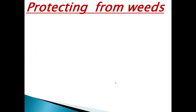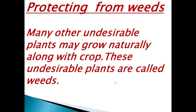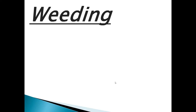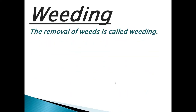The next agricultural practice is protecting from weeds. In a paddy field, we may find unwanted plants like Parthenium or grass. These unwanted plants are called weeds. Many undesirable plants may grow naturally along with the crop, competing with crop plants for water, nutrients, space and light, affecting crop growth.